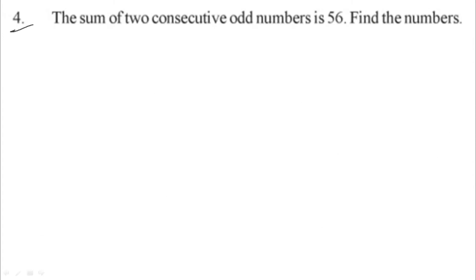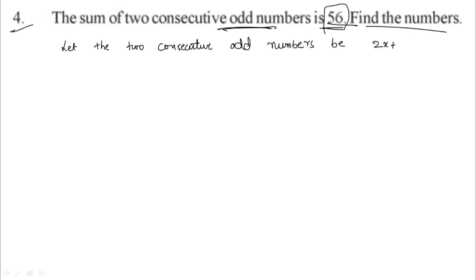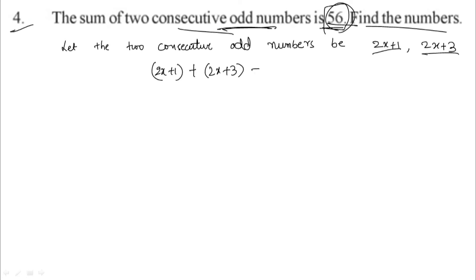4th question: The sum of 2 consecutive odd numbers is 56. Find the numbers. Let the 2 consecutive odd numbers be 2x plus 1 and 2x plus 3. Their sum equals 56, so 2x plus 1 plus 2x plus 3 equals 56.